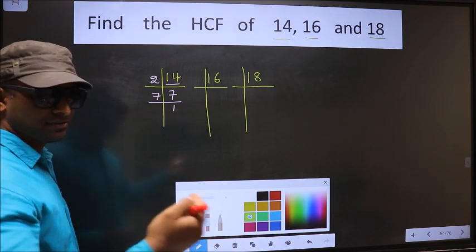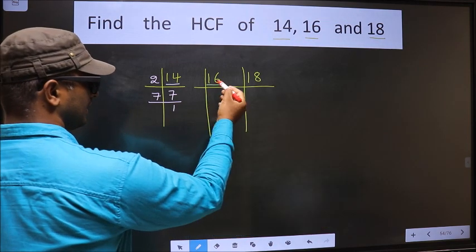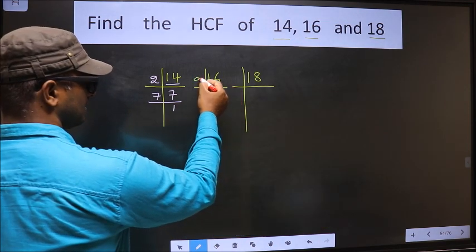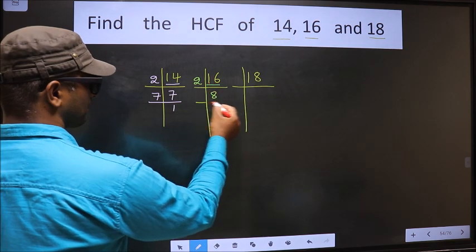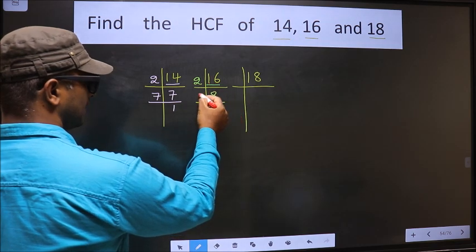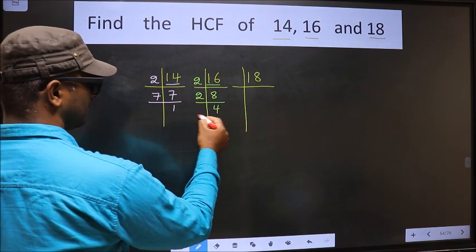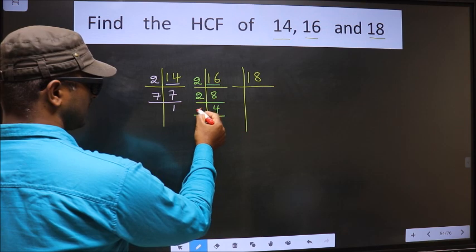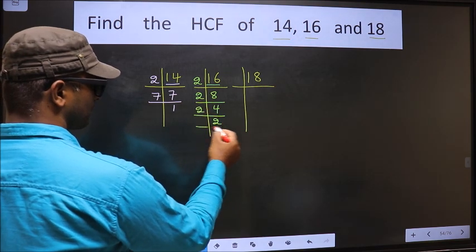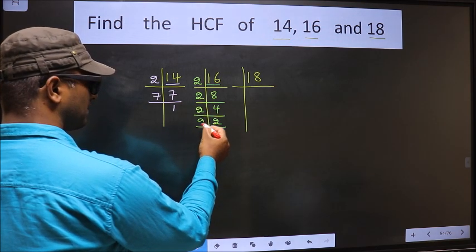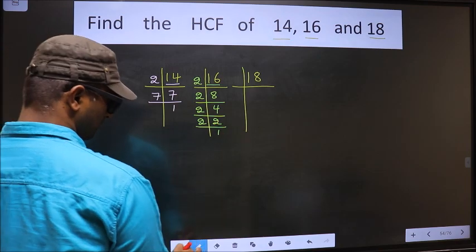The next number is 16. 16 is 2 times 8. 8 is 2 times 4. 4 is 2 times 2. Now we have 2, which is a prime number, so 2 times 1 is 2.